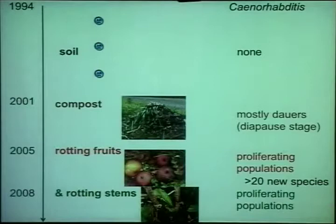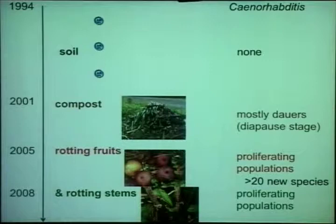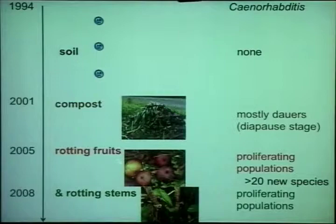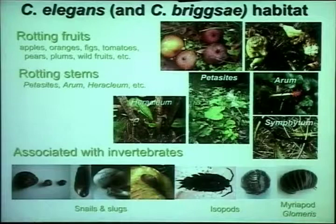More recently, because I was quite frustrated that in mainland France rotting fruits are mostly cultivated species, and because I had found banana pseudostems harboring large populations in the tropics, I started sampling stems of herbaceous plant species which rot at the base. There too I find proliferating populations, which are a more natural environment than artificial apple orchards. So right now the places where I find proliferating populations of C. elegans and C. briggsae are rotting fruits and rotting stems of various species.